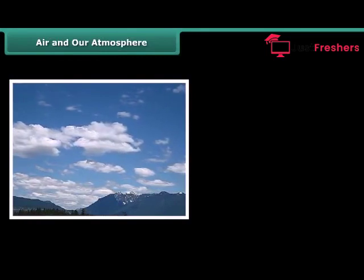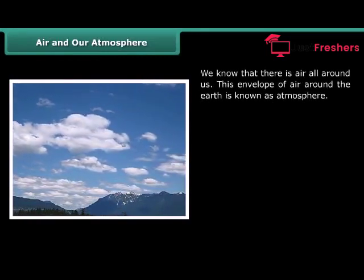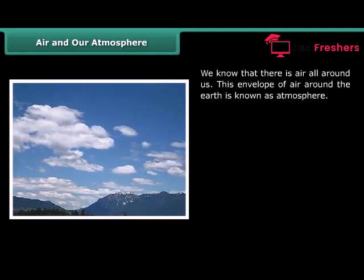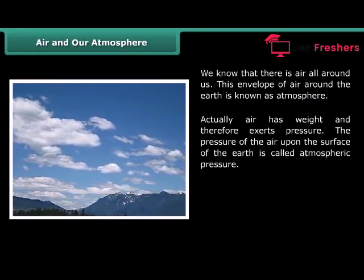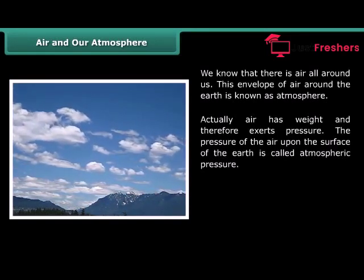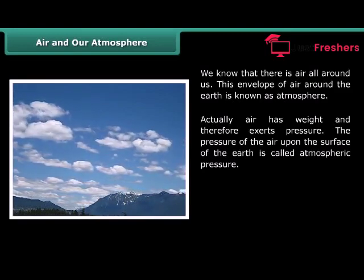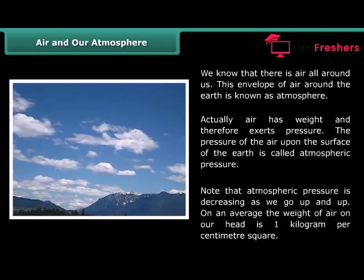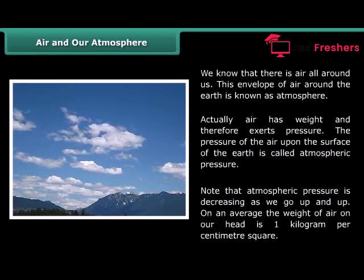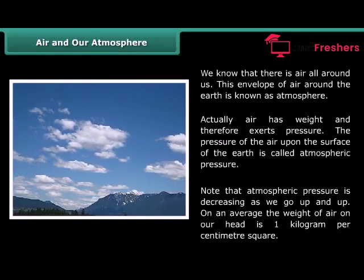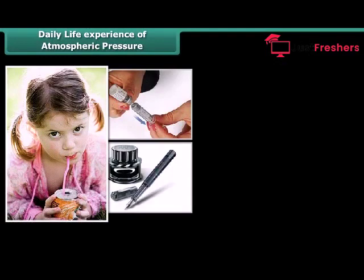Air and our atmosphere. We know that there is air all around us. This envelope of air around the earth is known as atmosphere. Air has weight and therefore exerts pressure. The pressure of the air upon the surface of the earth is called atmospheric pressure. Note that atmospheric pressure decreases as we go higher up. On average, the weight of air on our head is one kilogram per centimeter square. In our day-to-day activities, we experience various instances of atmospheric pressure. Some common examples are: sipping a cold drink through a straw, dipping the nozzle of a syringe in liquid, and filling ink in fountain pens.